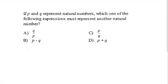In this question, they ask: if P and Q represent natural numbers, which one of the following expressions must be another natural number? So A says Q divided by P, B says P minus Q, C says P over Q or P divided by Q, and D says P plus Q.